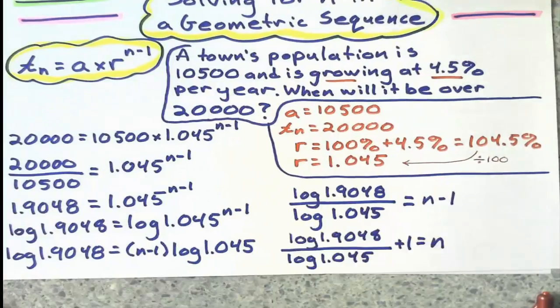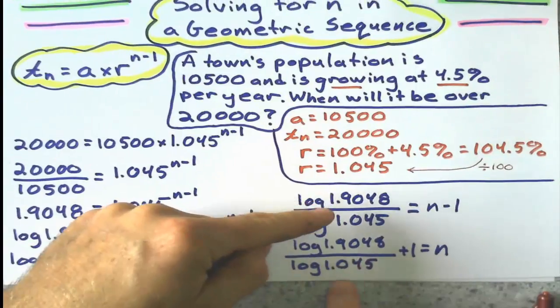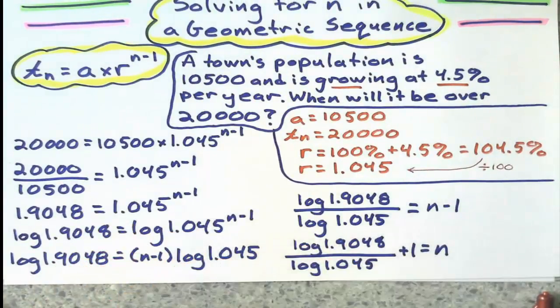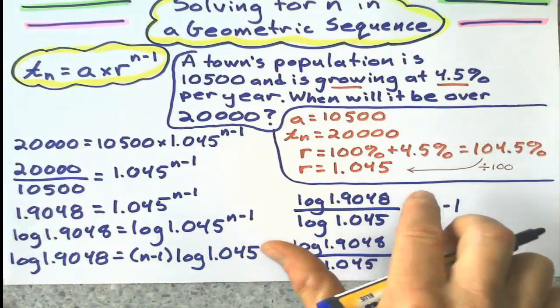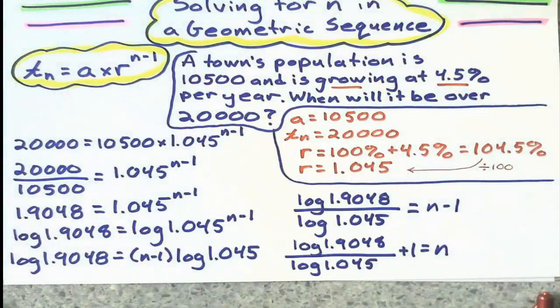So what I did was, I don't work this out and get a decimal just yet. I just say, okay, that log divided by that log plus 1 equals n. And if I do that all on the calculator, I will get how many years it will take for that population to get 20,000.